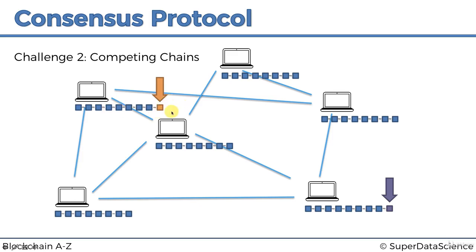Nevertheless, for the blockchain this is a problem because it needs consensus on how to keep growing — do we keep growing with the orange block or the purple block? As we'll discuss further in the course, these blocks could have different transactions inside them. You can't just accept both blocks and split the fee. It has to pick one. If the consensus protocol is not in place, you'll have conflicting chains that split into two, then four, then eight, and eventually you'll just have a ton of completely separate blockchains — and we don't want that.